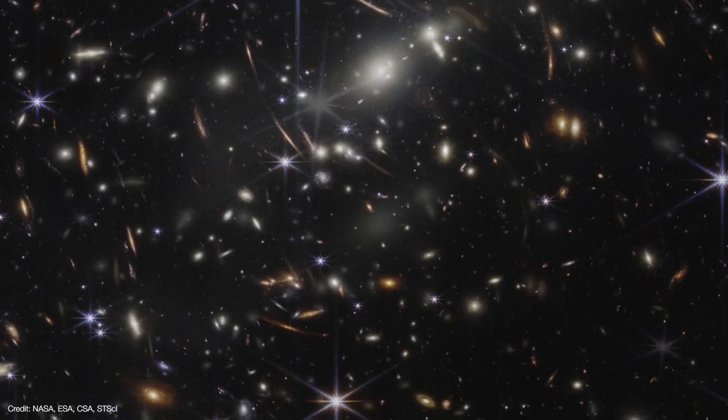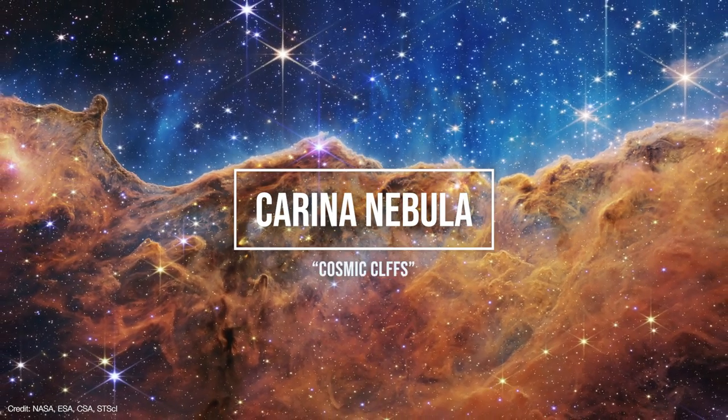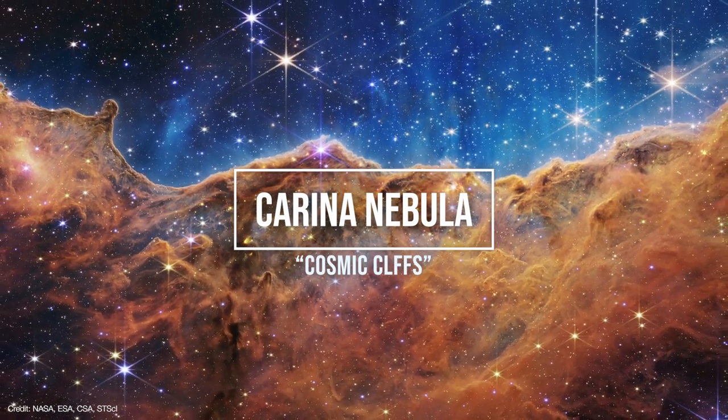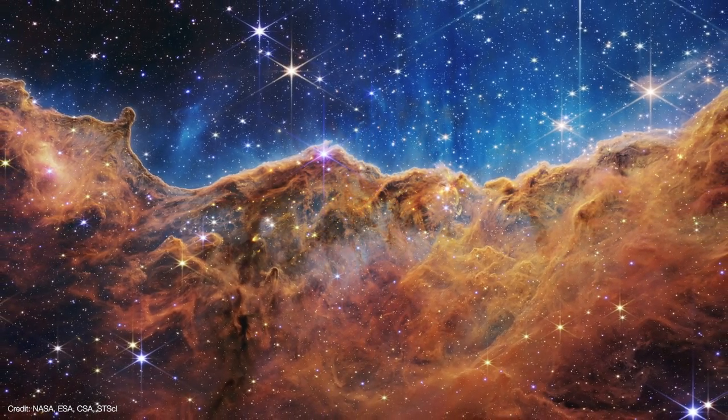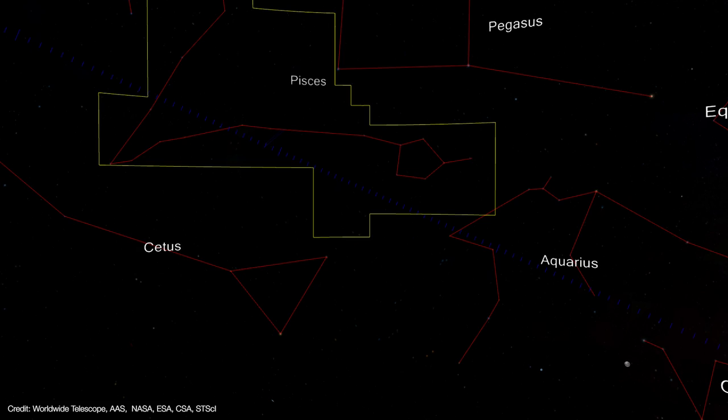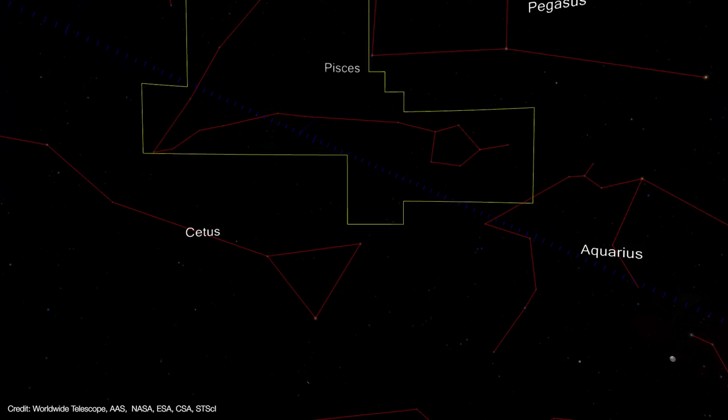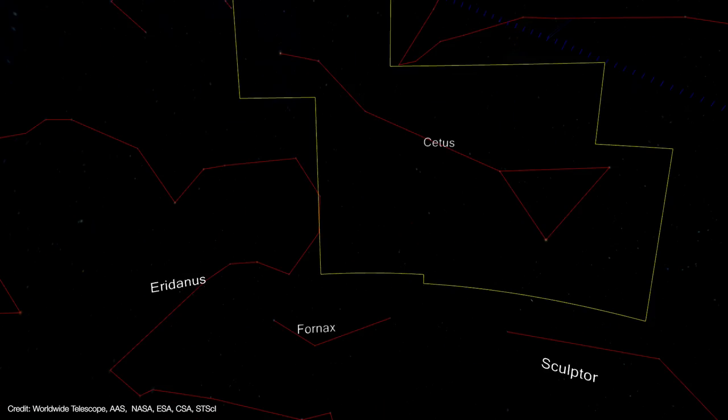First up is a portion of the Carina Nebula, dubbed the Cosmic Cliffs. And this image was made with Webb's near-infrared camera or NIRCam. And holy mackerel, this is amazing! I mean, just look at all this detail! The nebula is located about 7600 light years away in the southern constellation Carina.